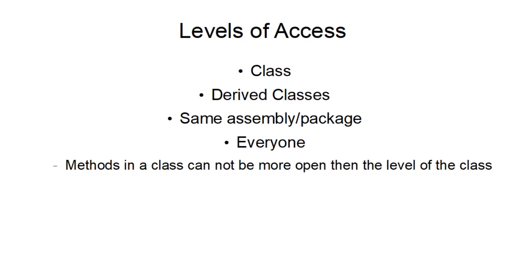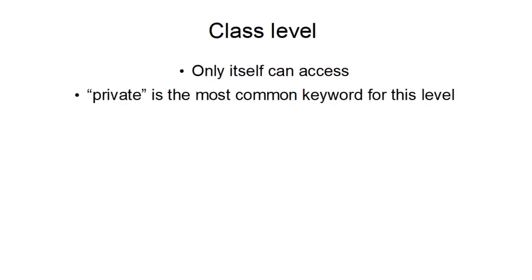Methods and variables in a class cannot be more open than the class itself. So if you have a class that only has class-level access, you can't have a method be open to everyone. Class level only has access to itself, and in almost all cases it's going to be the private keyword.